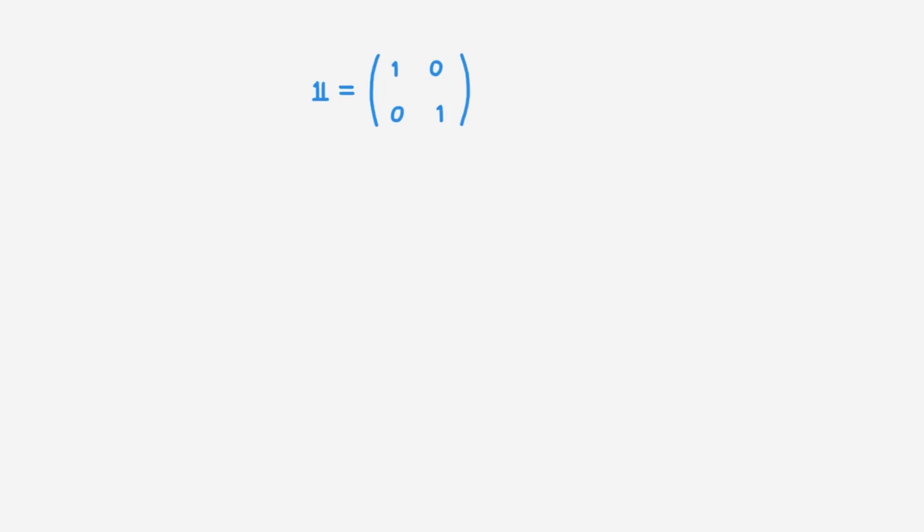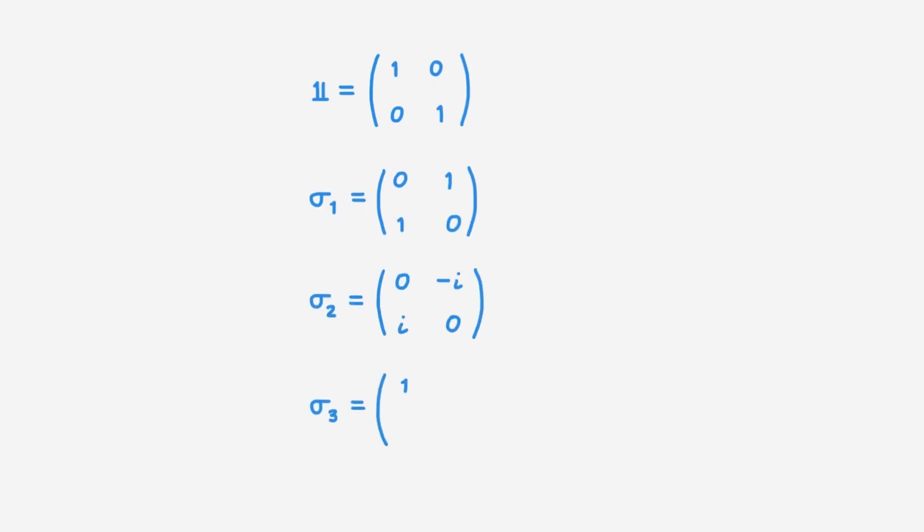Specifically, we're going to demonstrate that any 2x2 matrix can be written in terms of the identity matrix and the three Pauli matrices. So let's go! Let's start with the 2x2 identity matrix. Let's also write down the Pauli matrices, starting with sigma 1, then sigma 2, and then sigma 3.